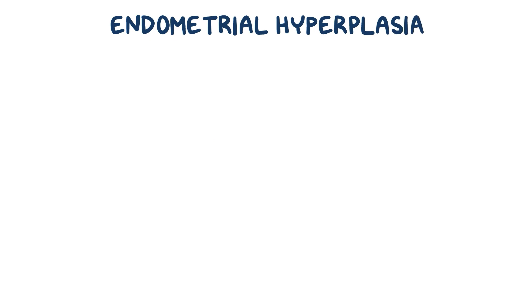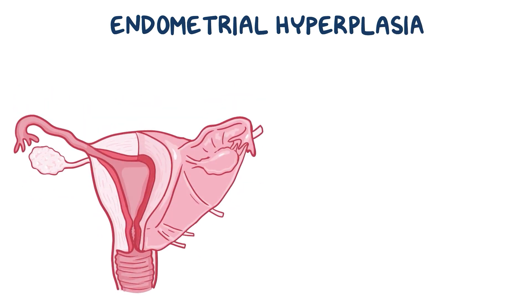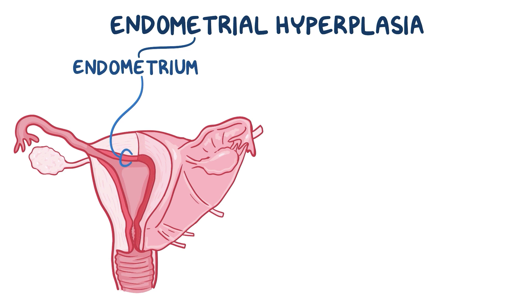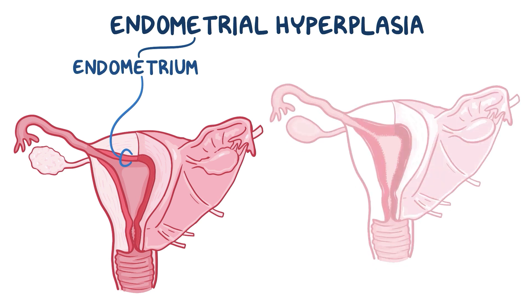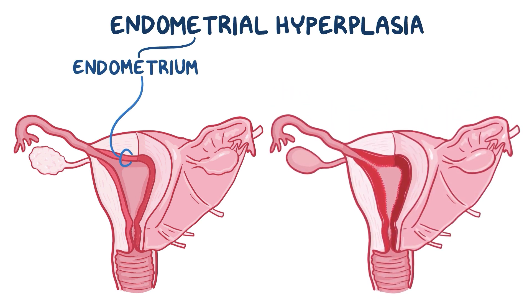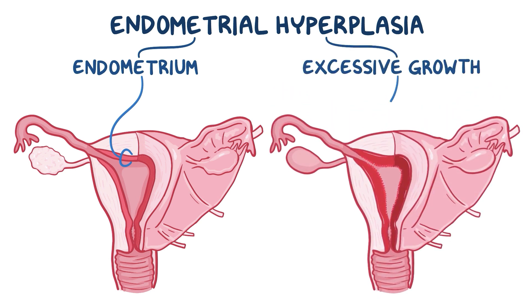With endometrial hyperplasia, endometrial refers to the endometrium, which is the inner lining of the uterus, and hyperplasia means increased growth. So endometrial hyperplasia means excessive growth of the inner lining of the uterus.